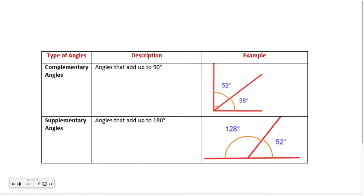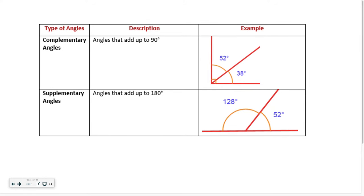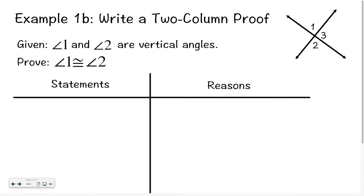Quick refresher: complementary angles add up to 90, and supplementary angles add up to 180. This will come in handy as we go through the lesson.